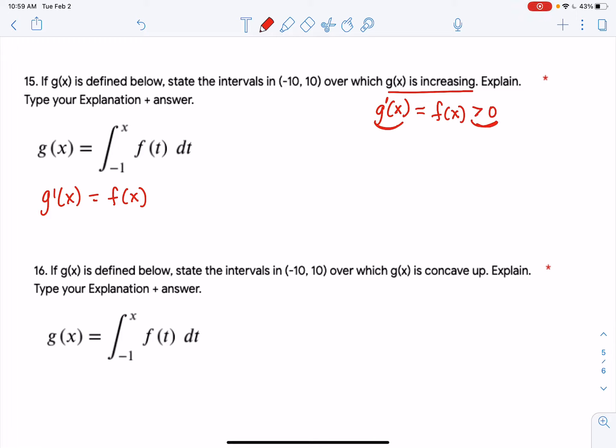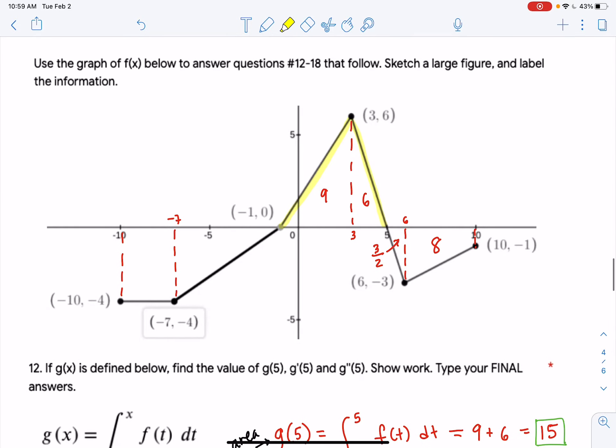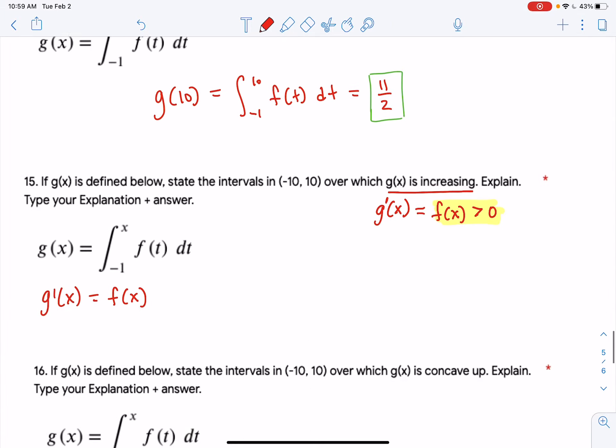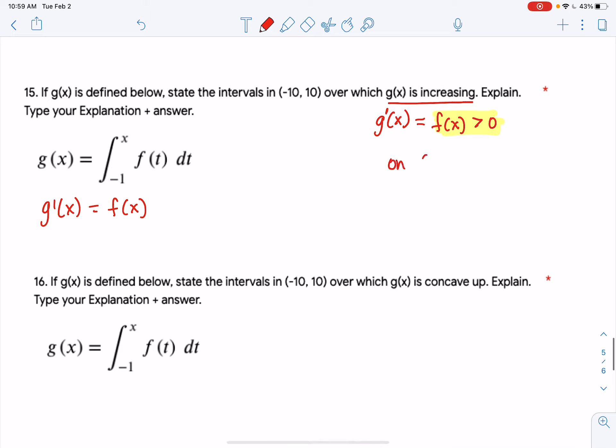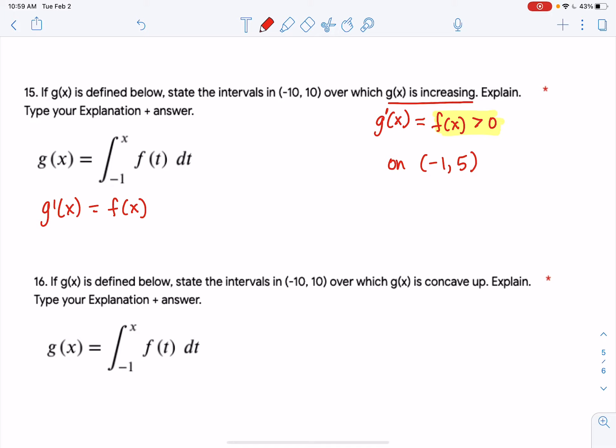But we wanted to write it in terms of f because we have the graph of f to look at. So let's go see where f is greater than 0. In this highlighted region, greater than 0 means above the axis. So from negative 1 until 5. All right, and we're done with 15.